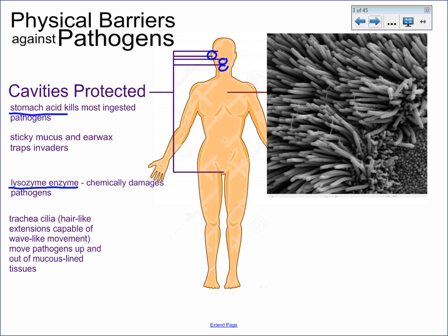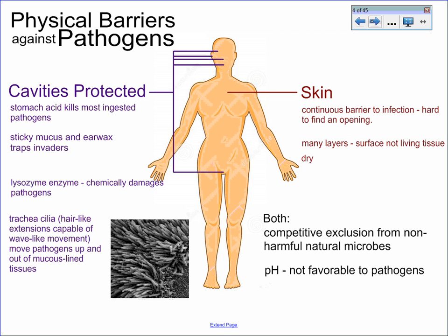Trachea cilia, which can be seen here, also push pathogens out. And aside from that, our skin is a continuous barrier that prevents them from making their way in. Skin is dead cells — it's tough to live on, it's many-layered, and it's dry.